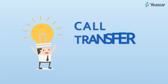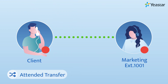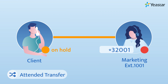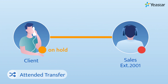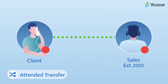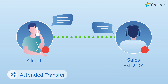Here we get two types of call transfer: attended transfer and blind transfer. With the attended transfer, the caller will be put on hold while you can talk to your colleague first and share the information with him. Then you simply hang up and both parties are connected.